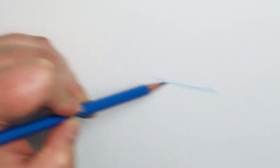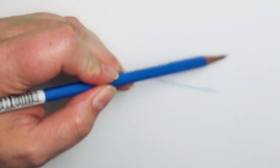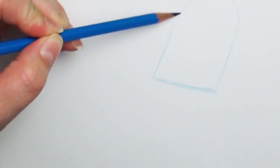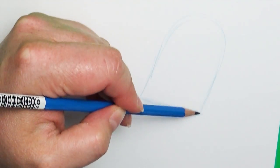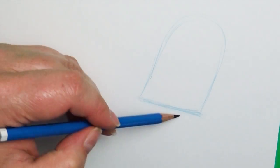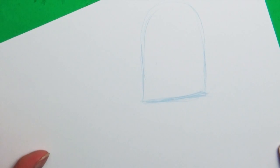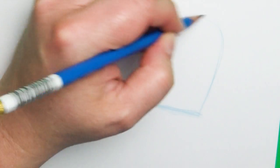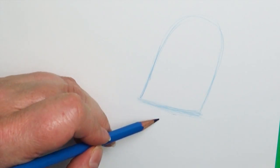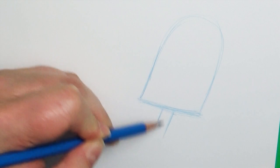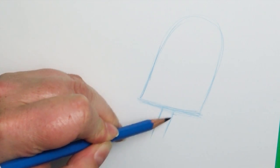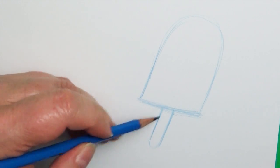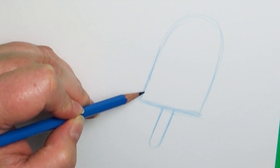I'm going to start with a line straight across and I'm going to loop this all the way around. I'm having mine tilted to the side, you could have it right side up if you want to. Then I'm going to go ahead and put the stick on the bottom, so I'm going to follow the same direction as these lines and come down with a little loop at the bottom. There's our basic ice cream shape.